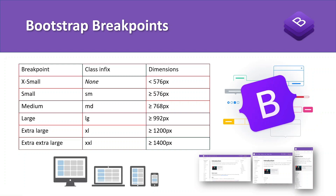If you write code for small, medium, large, and extra large screen sizes, then for each screen size the layout will change. For example, for small screen or mobile there is one layout, for medium or tablet the layout changes, for large or laptop it changes again, and for XL or large monitors it changes once more. To achieve this you need to write separate layout code for each screen size — one for small, one for medium, one for large, and one for extra large.